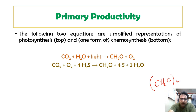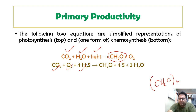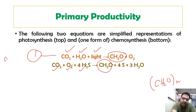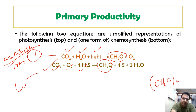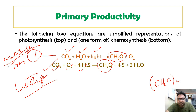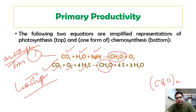Two simplified representations of photosynthesis: the first equation — CO2 plus water plus light gives CH2O — is by autotrophs, also called transducers. The second equation — CO2, oxygen, and H2S giving CH2O — is that of lithotrophs, that is sulfur bacteria. In the first case, light is utilized to form carbohydrates; in the second, sulfur-like substances are used, but ultimately it is primary productivity at the producer level.